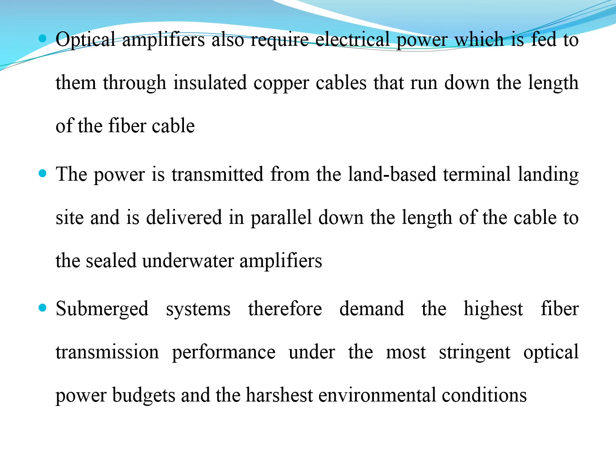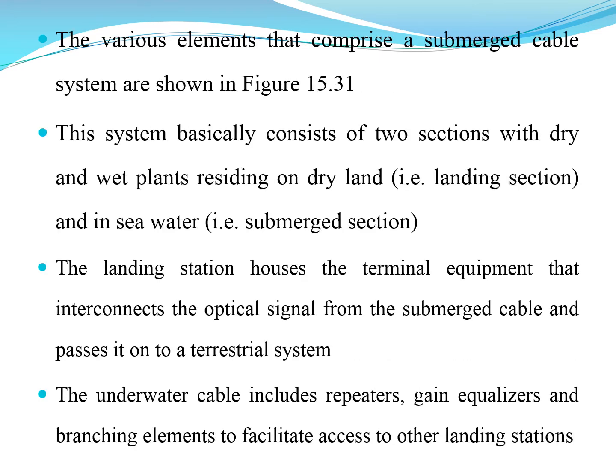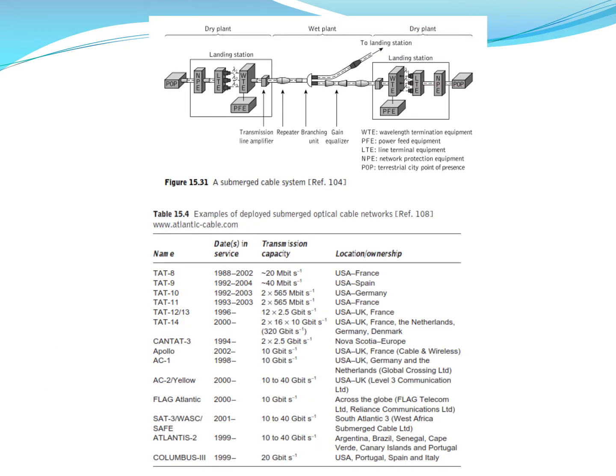Optical amplifiers are also required to enhance the optical power in the system. We have line terminal equipment, landing stations, and plants. Between those we have several repeaters, branching points, and equalizers. This is a point-to-point system.